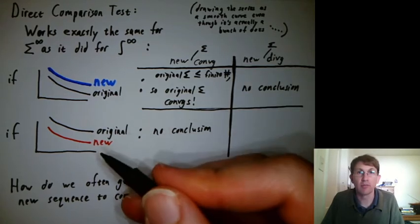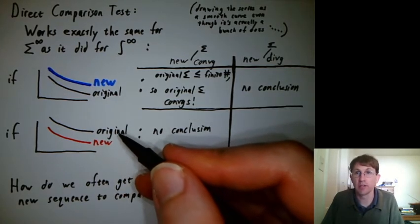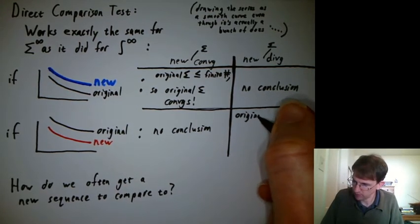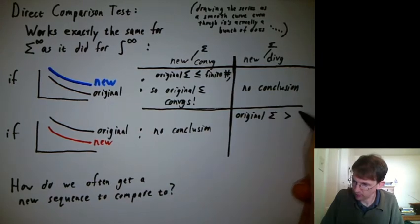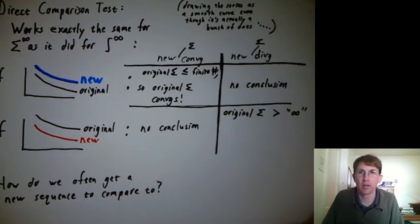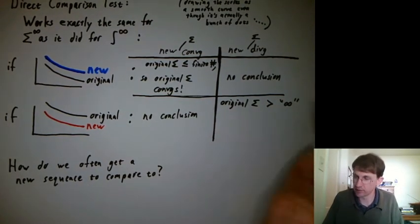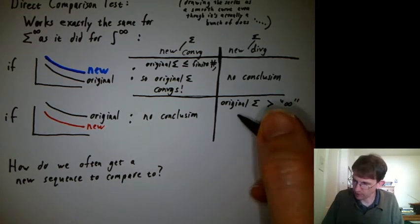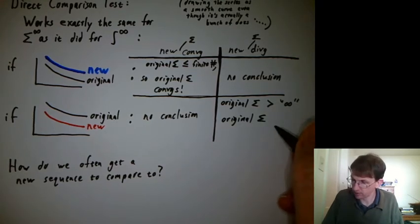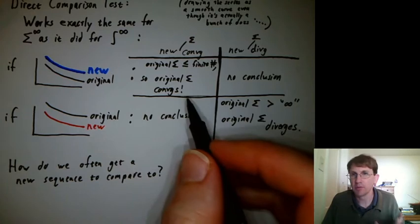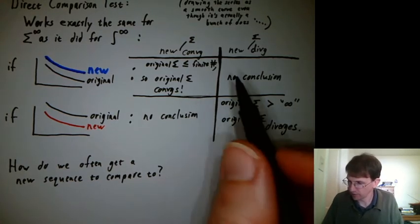And what if the new sum diverges, then the original is bigger than that, infinity. So the original sum is bigger than infinity. And remember, there's different sizes of infinity, so we're not saying strictly bigger than infinity exactly. So that means that the original sum diverges. So it's a little bit complicated where sometimes we can draw a conclusion, sometimes we can't, but that's just how it goes.